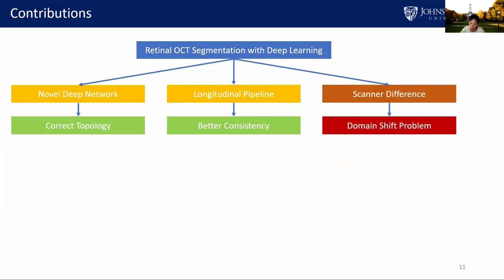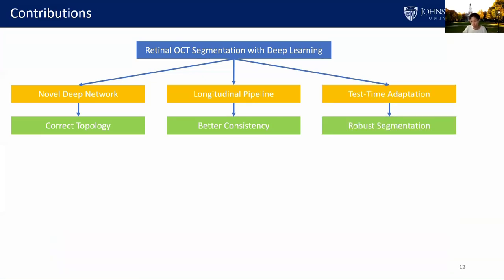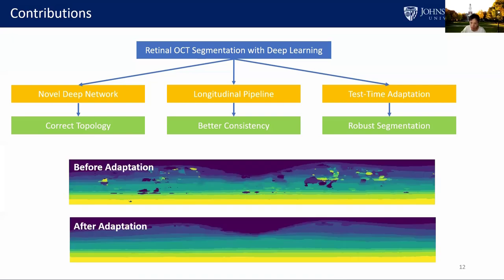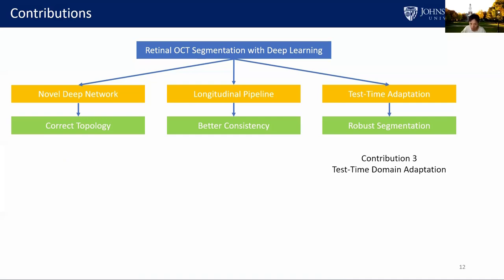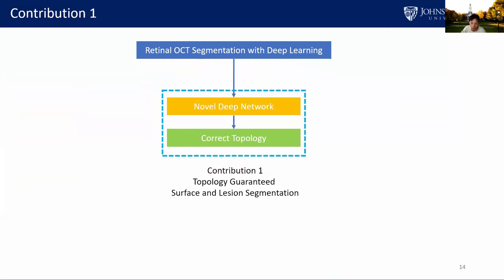A third problem involves an inherent limitation of deep learning: deep networks are often overfitted to their training data. A deep network trained on a Spectralis scanner can produce good segmentation but bad results on images from a Cirrus scanner — the domain shift problem. We propose a novel test-time domain adaptation method that adapts models trained on Spectralis images to Cirrus images. This is our third contribution. In the following presentation, I will present the details of the first two contributions due to time limitations.